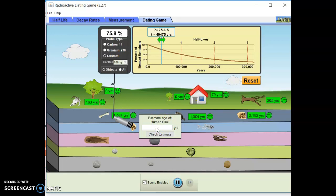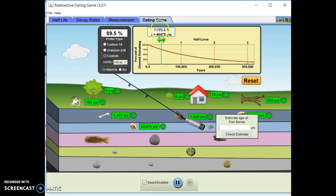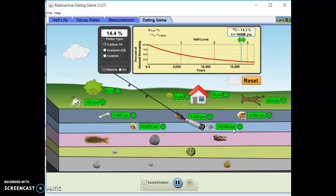Okay, let's try this out. It doesn't have to be right on there, but you do want it to be pretty close. 40,475 years. There we go. Okay, now we are moving to the fish bones. We're about halfway here. Let's see. Can we do carbon? We'll be able to do carbon. 14.4. Pretty soon here we're going to have to switch to uranium. 16,099 years.